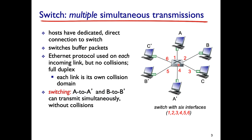A switch with six interfaces connects six devices. Because switches are active and can buffer packets, A can communicate with A-prime and B can communicate with B-prime simultaneously without colliding. Every single link is its own collision domain, with no other devices competing — this is fantastic for performance.